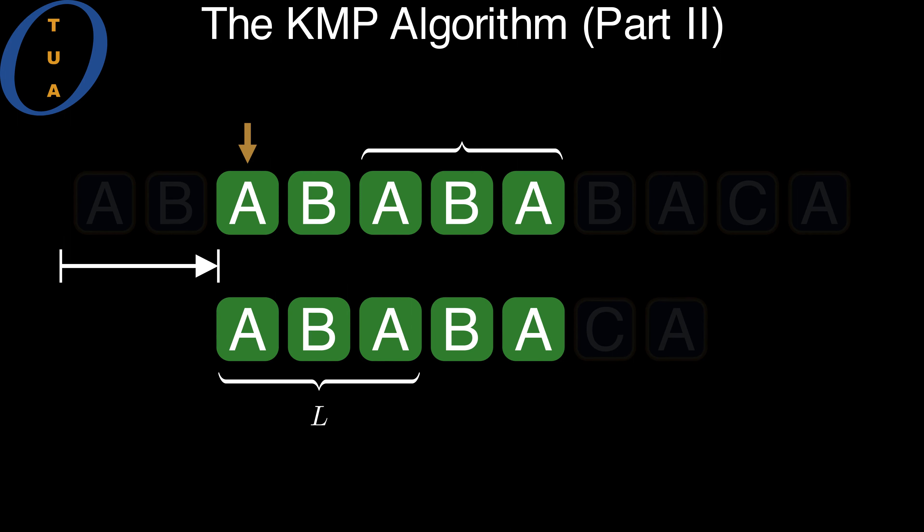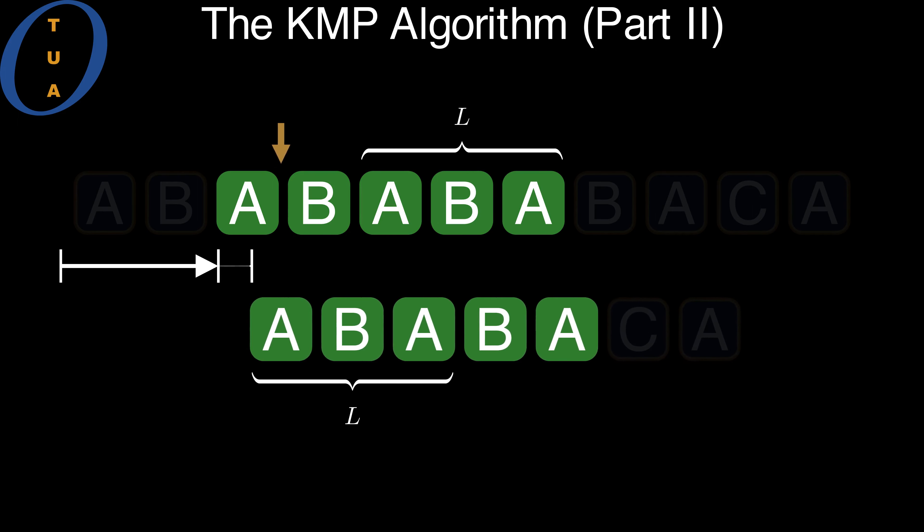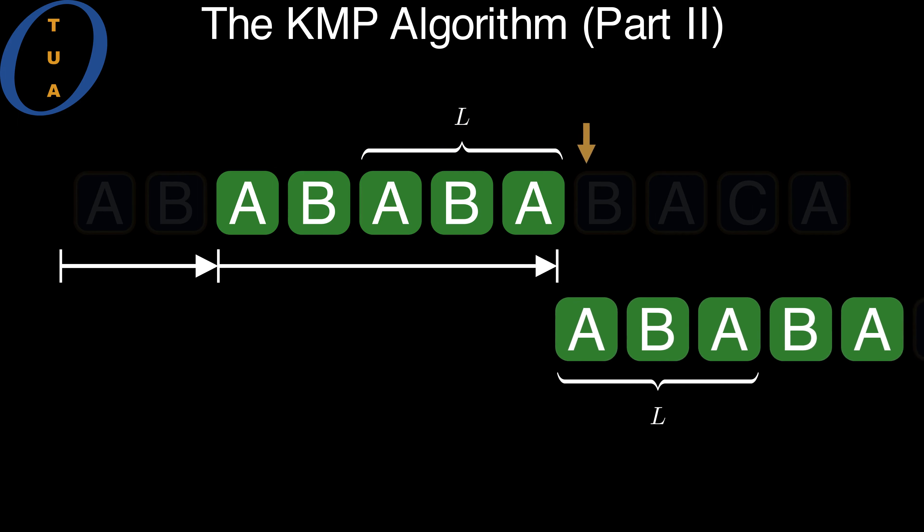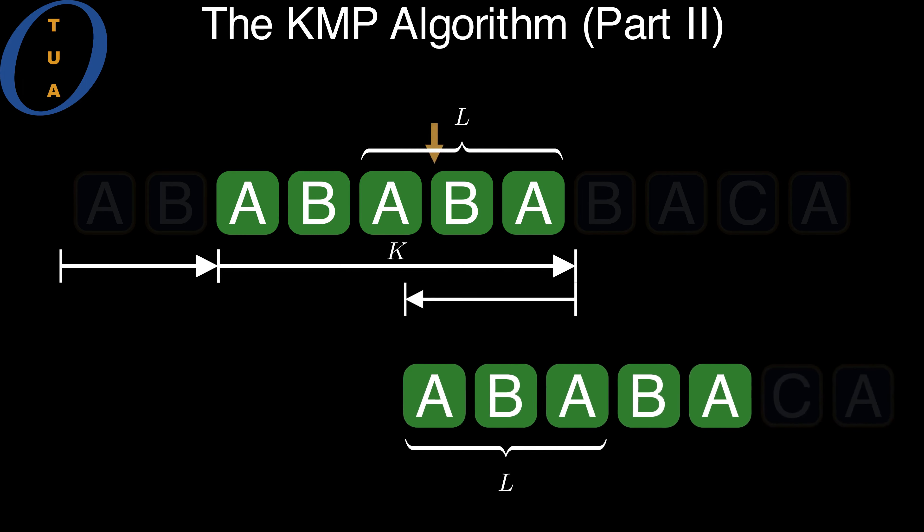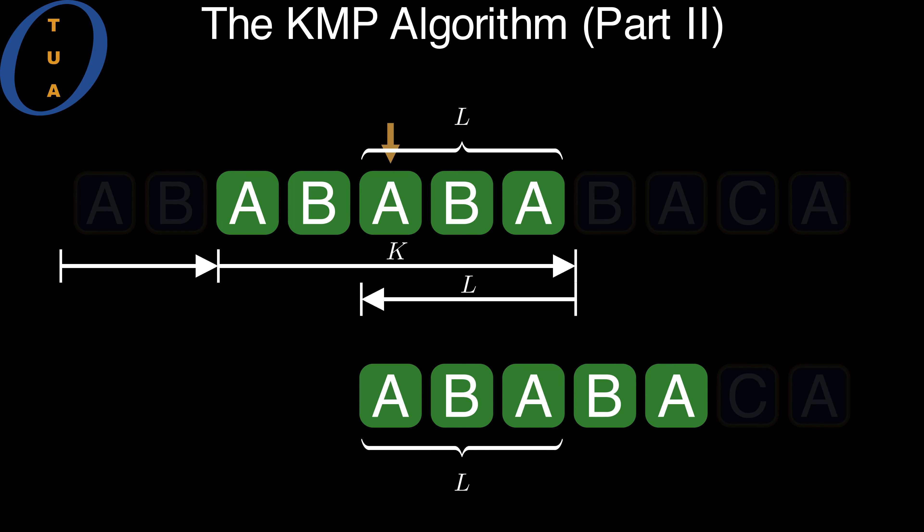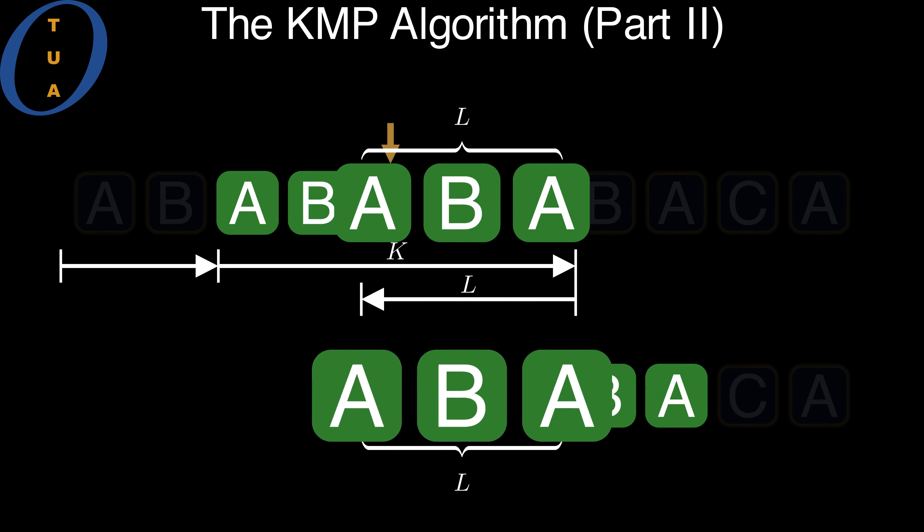We compute the new offset by conceptually moving forward the pattern by K positions towards the right, and then retracting it back towards the left by L positions. This ensures that the last L symbols of the overlap in the text align with the first L symbols of the overlap in the pattern,